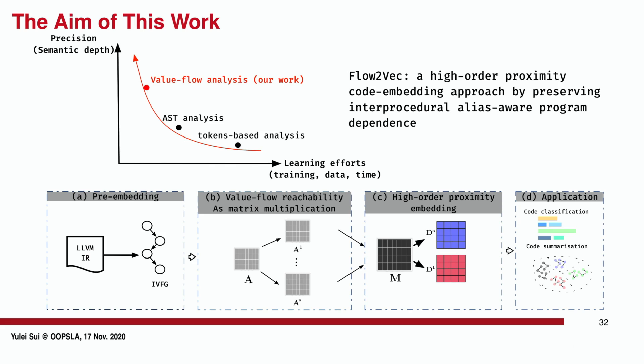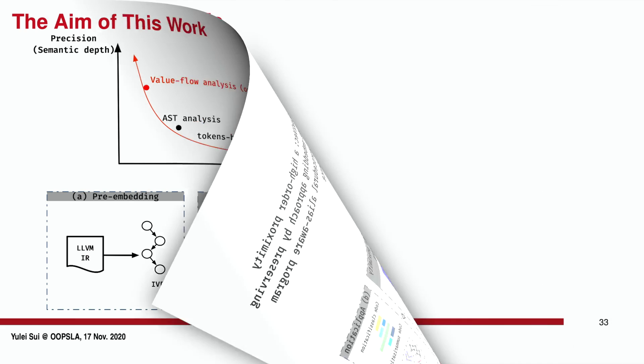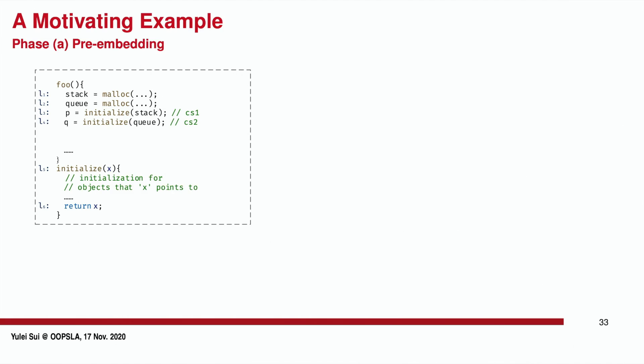Next, let us use an example to go through these four phases of our approach. Here is a code fragment extracted from a real-world project, Bison. The code allocates two containers, stack and queue, at line 1 and line 2, and then initializes the two containers by calling method 'initialize' through call sites CS1 at line 3 and CS2 at line 4.